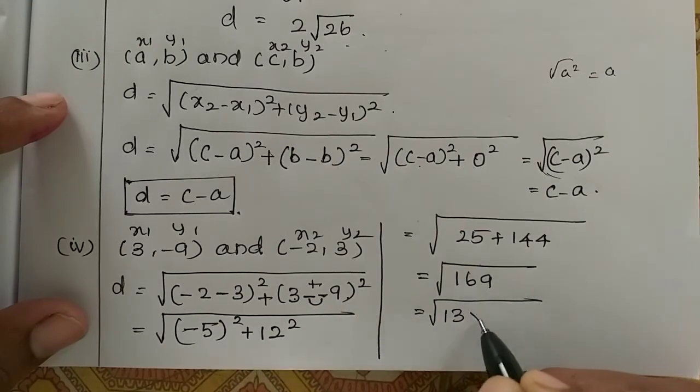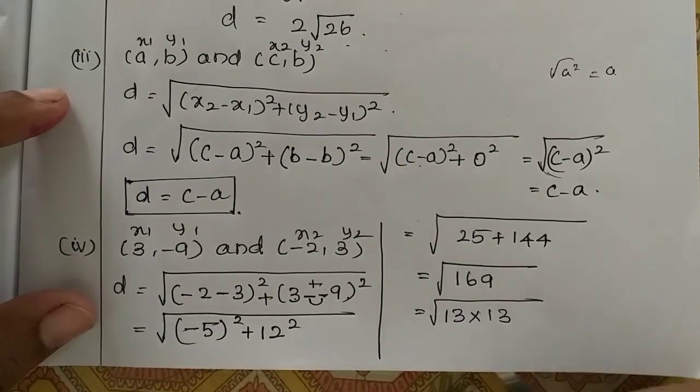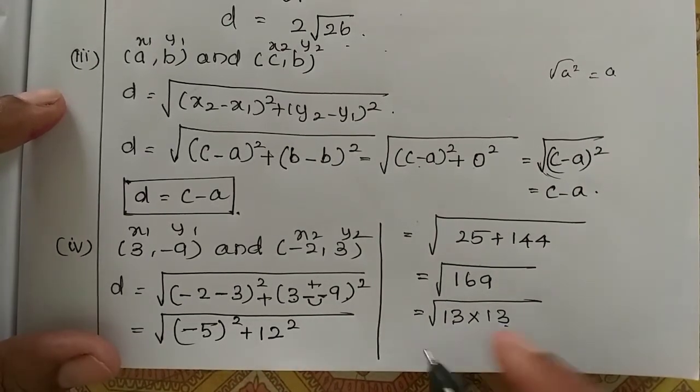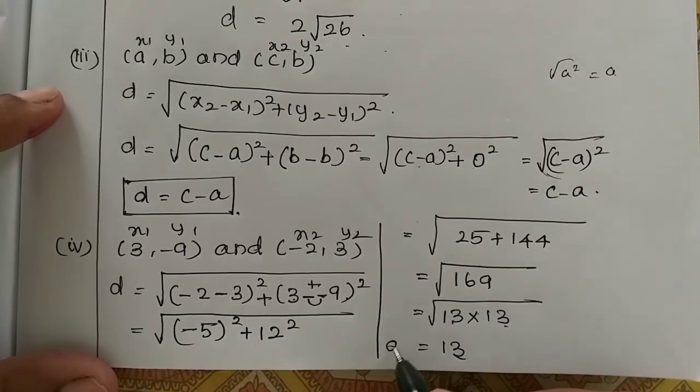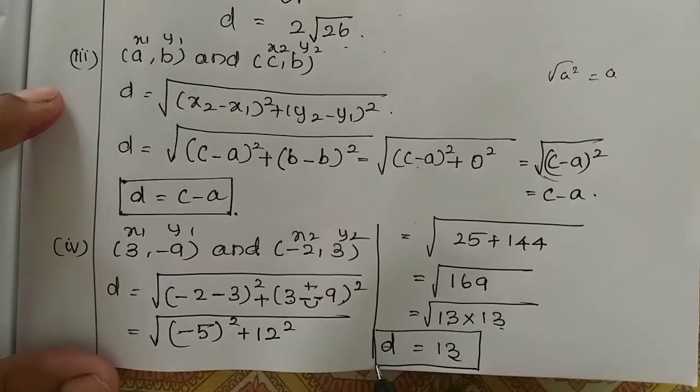Okay, 169 is 13 square. 13 into 13, 169. So out of 2, 13, one 13 comes out. Okay? So the distance is 13 units. Okay? That's all.